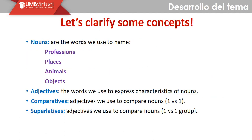So we are going to start with the grammar review for the second module. First of all we are going to clarify some concepts in order for you to understand the topic I am going to explain. Nouns are the words we use to name professions, places, animals or objects. Adjectives are the words that we use to express characteristics of nouns. Comparatives are adjectives that we use to compare nouns, one versus one. And finally superlatives are adjectives that we use to compare nouns when it comes to one object or individual versus one group.